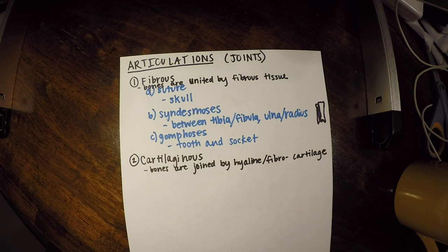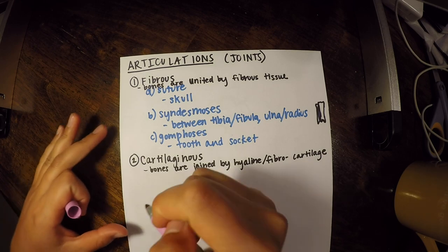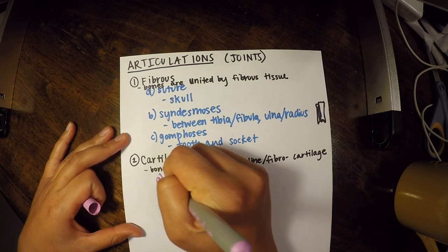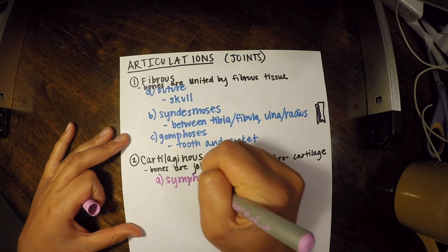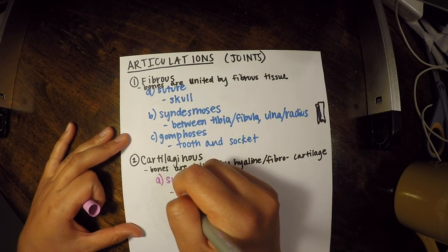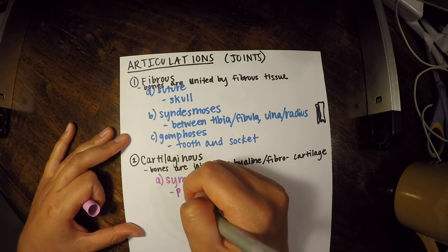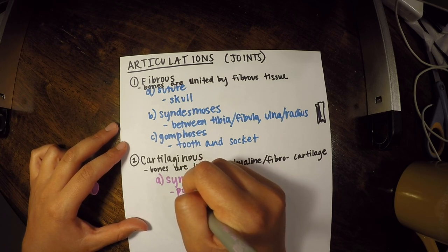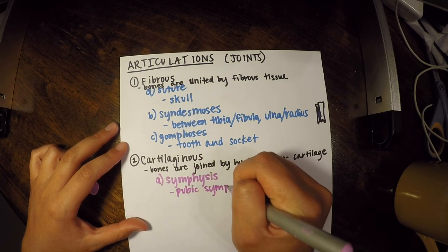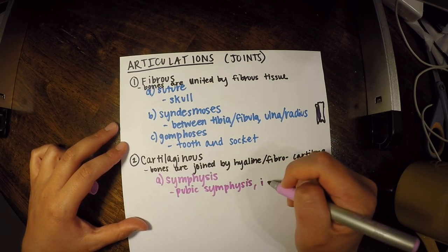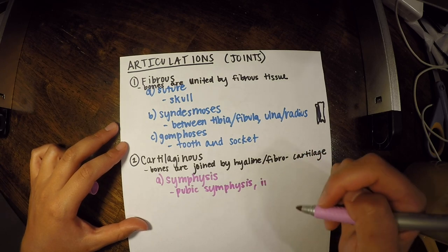We have two types of cartilaginous joints. The first is a symphysis joint. Examples include the pubic symphysis, which we just learned about when studying the pelvis, and intervertebral discs — the discs in between each vertebra.